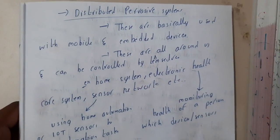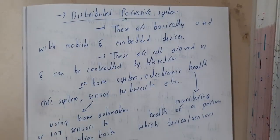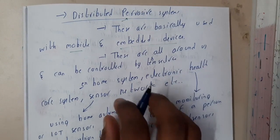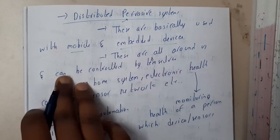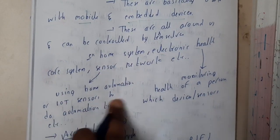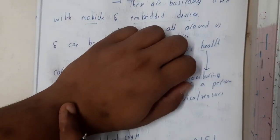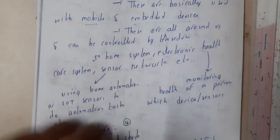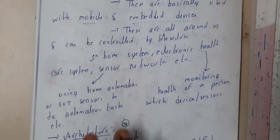The third type is the distributed pervasive system. This system is used in mobiles and embedded systems — basically any small electronic device that continuously gathers data. These devices are all around us and controlled by themselves. The best examples are home systems, electronic healthcare sensors, and IoT sensors used in home automation. For example, digital smartwatches monitor your pulse, count steps, and display phone calls — these use small sensors connected via Wi-Fi or Bluetooth.